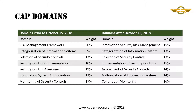After October 15th, the domains change to: information security risk management at 15%, categorization of the information system at 13%, selection of security controls at 13%, implementation of security controls at 15%, assessment of security controls at 14%, authorization of the information system at 14%, and continuous monitoring at 16%.